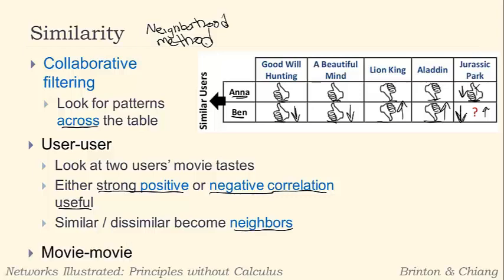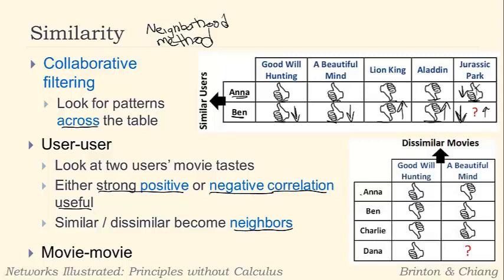Additionally, we can also do movie-to-movie similarities. Let's look at a bunch of users and see what they think of two different movies — Good Will Hunting and A Beautiful Mind. Anna likes Good Will Hunting but didn't like A Beautiful Mind too much. Ben didn't like Good Will Hunting but liked A Beautiful Mind. Charlie didn't like Good Will Hunting but liked A Beautiful Mind. So we'd say these movies seem to be very dissimilar. If we know that Dana liked Good Will Hunting, we'd say she probably didn't like A Beautiful Mind.